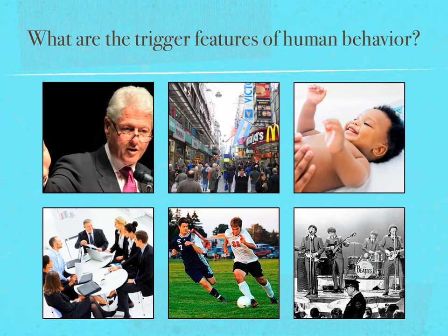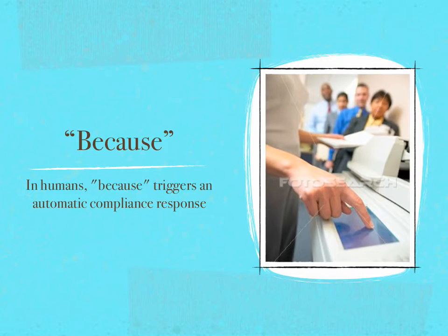So what are the trigger features of human behavior? How can I consistently and mechanically trigger automatic compliance — get people to robotically say yes? In humans, because triggers an automatic compliance response. People like to have reasons for what they do, whether complying or requesting. Harvard social psychologist Ellen Langer's experiment demonstrated this by asking a small favor of people waiting in line to use a library copying machine.